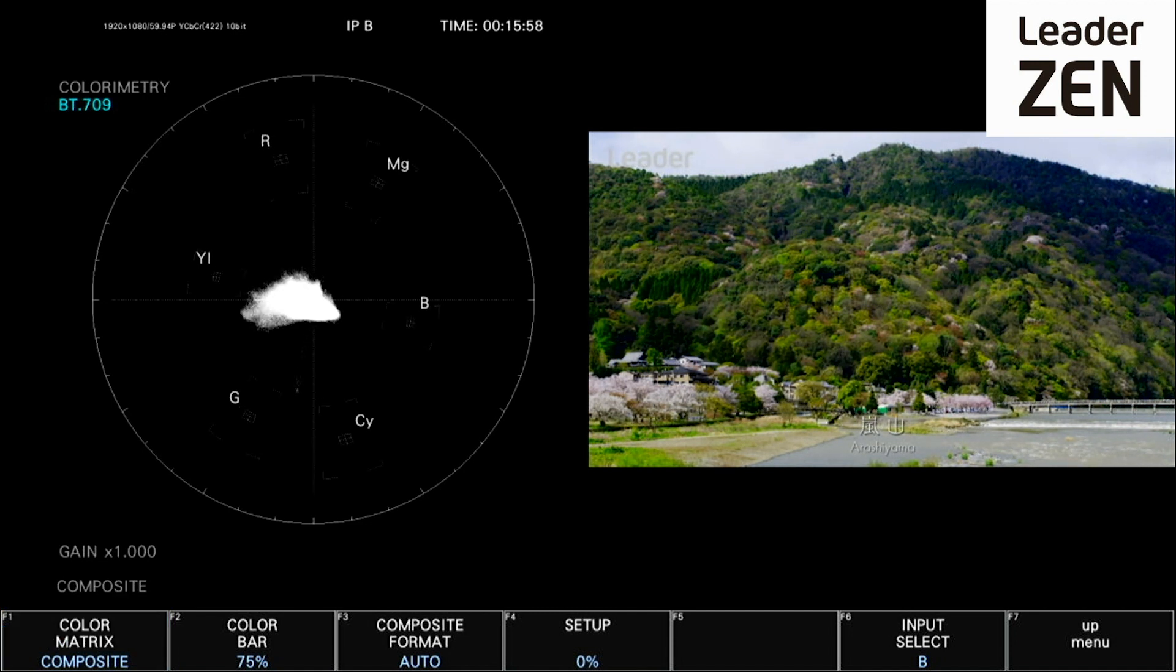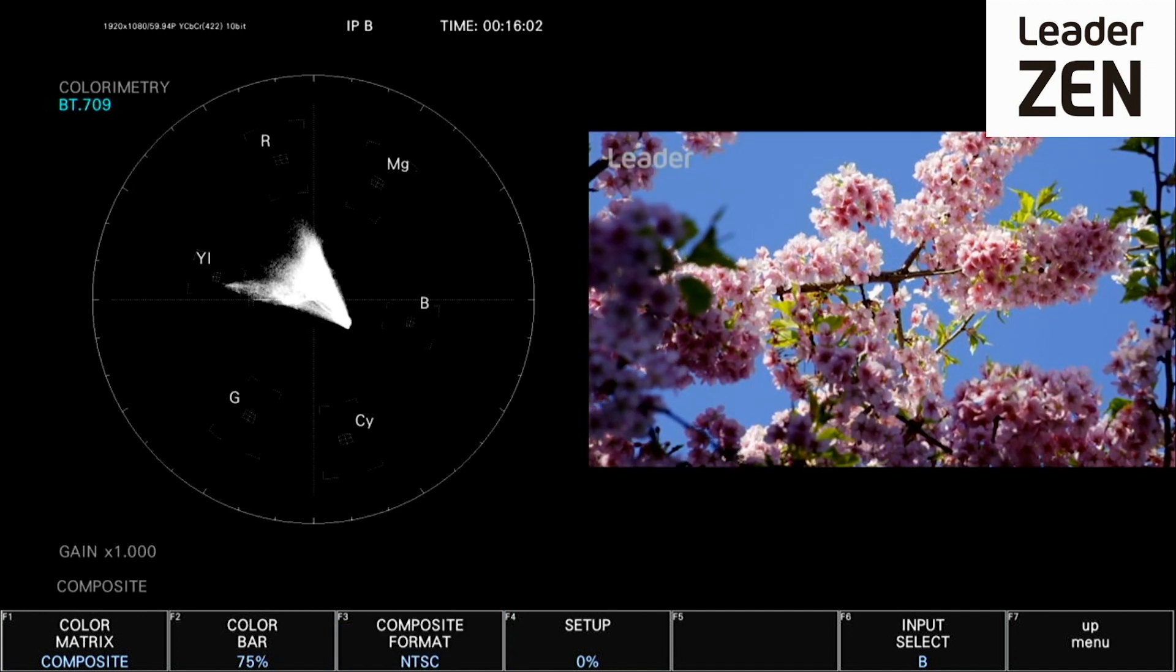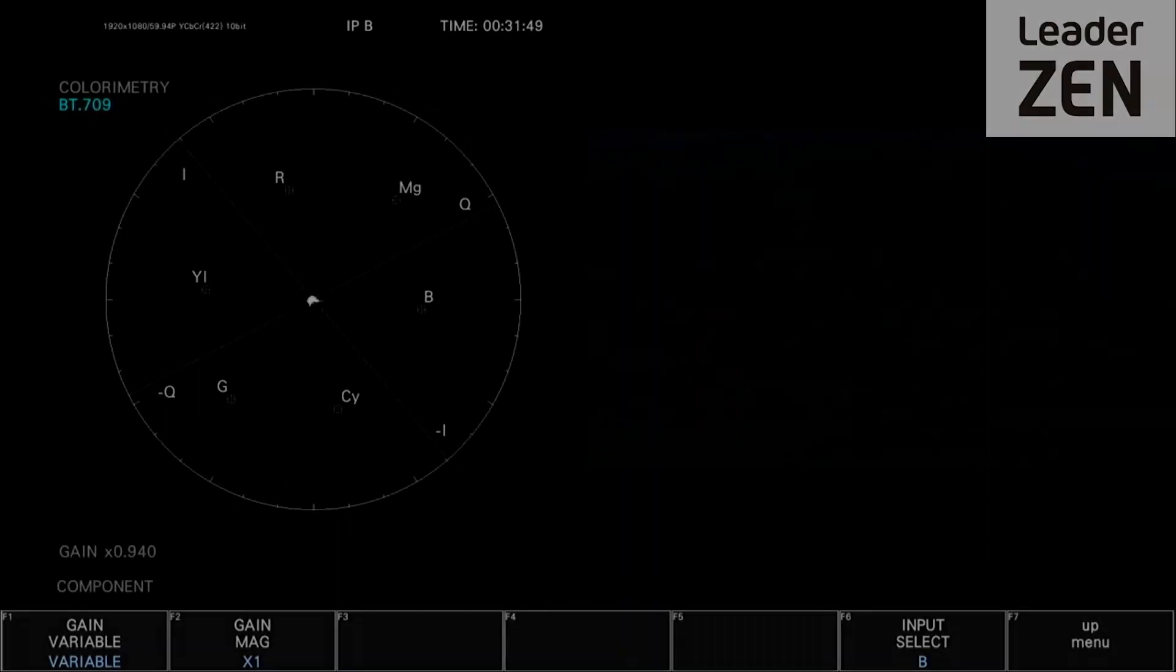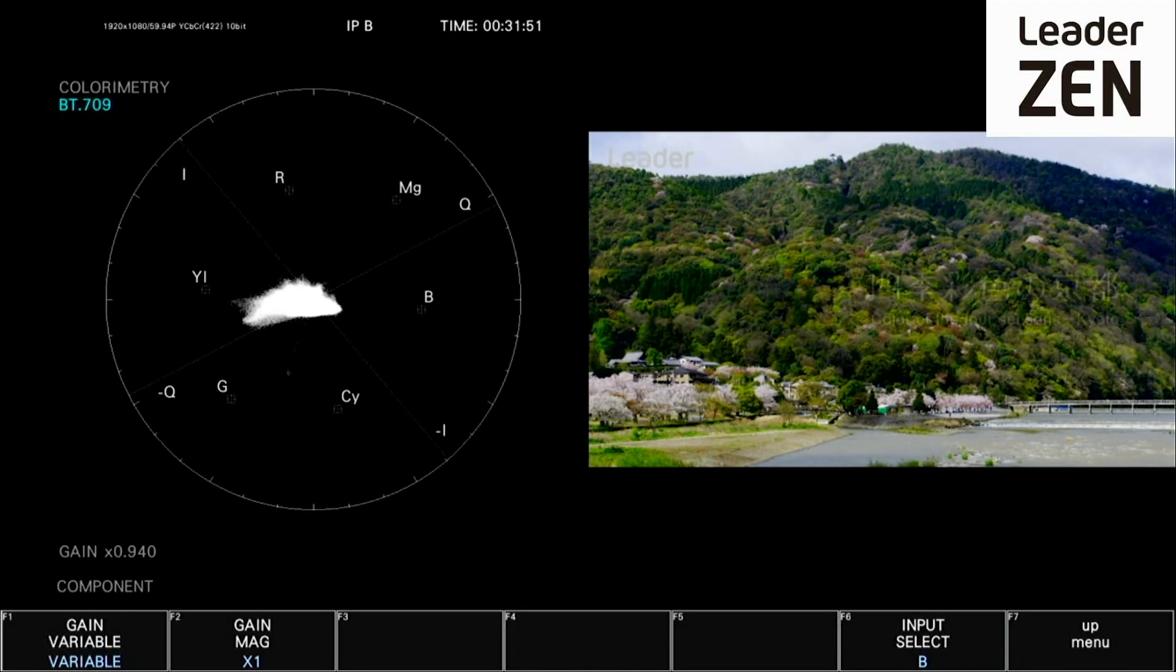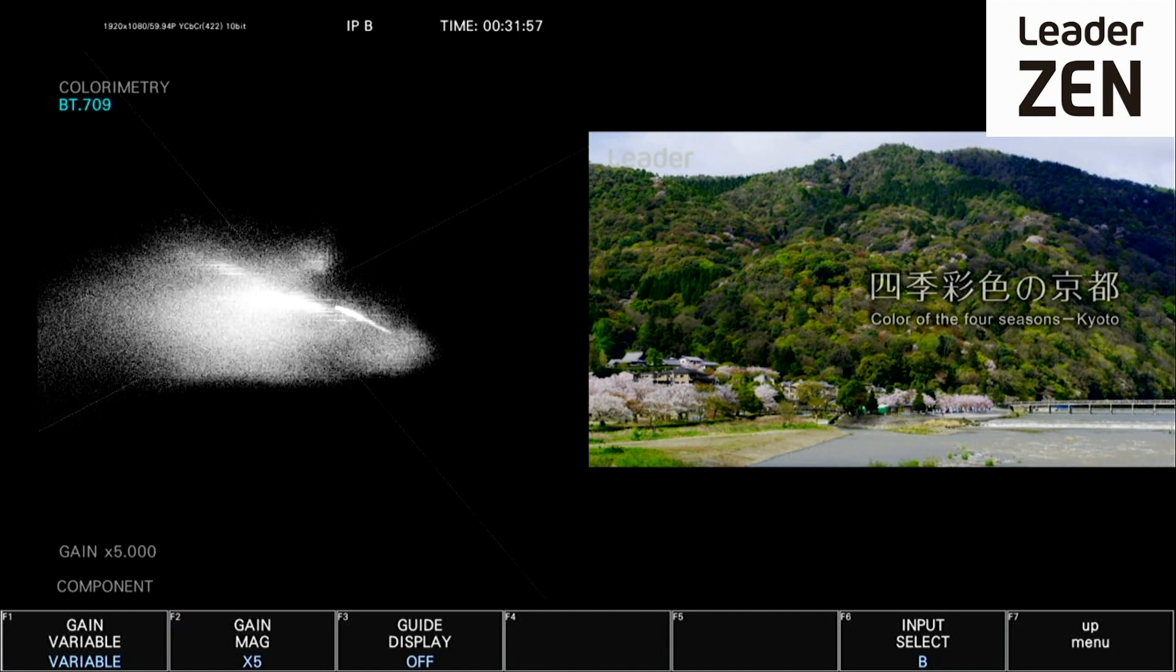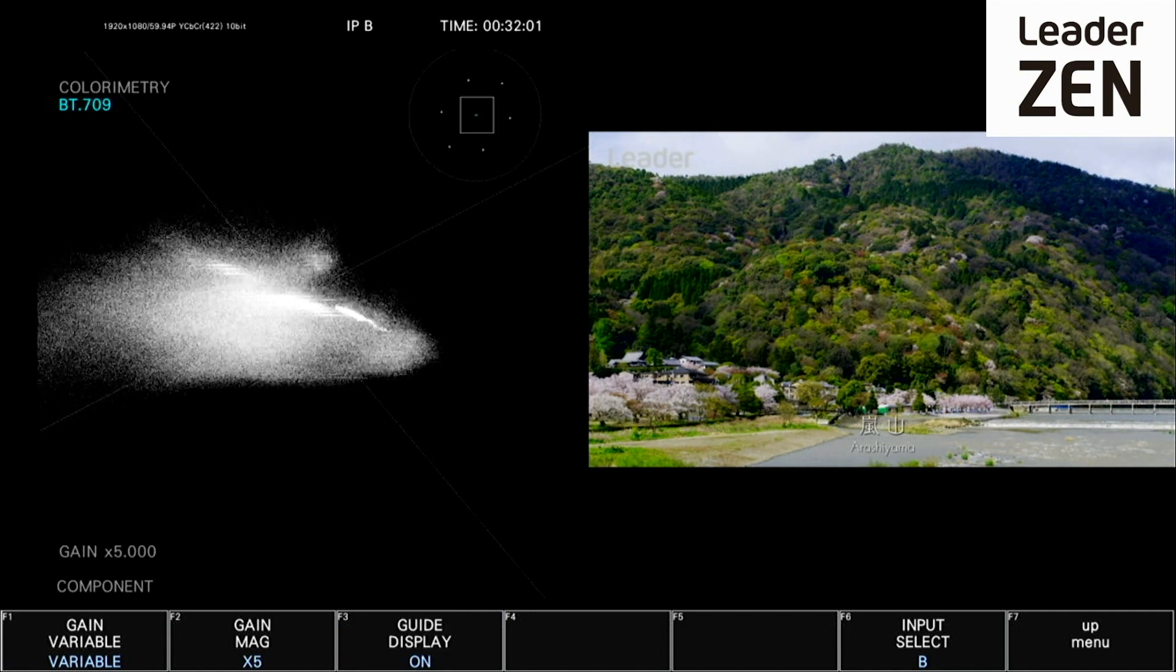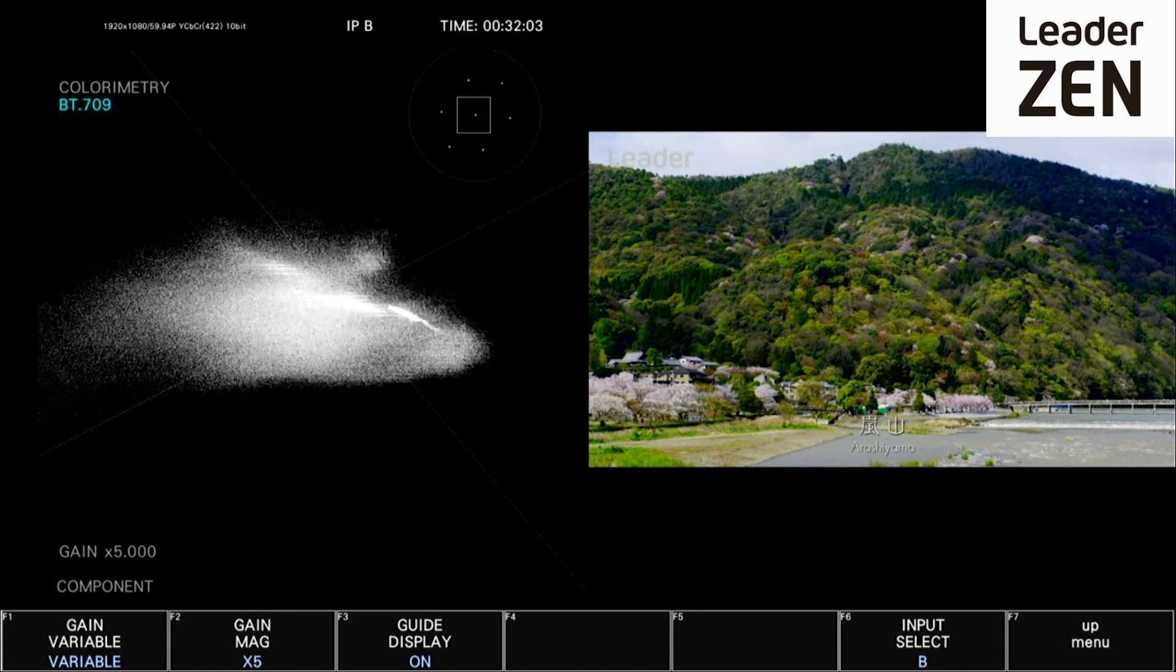The composite format allows NTSC, PAL, or automatic selection. The vectorscope display can also be magnified with gain applied to the input signal in either x1 or x5, along with variable adjustment up to x2.